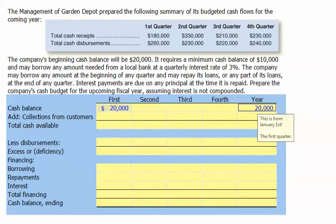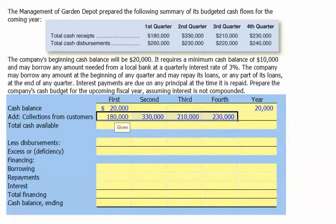Let's go ahead and prepare the cash budget for the upcoming year, assuming that interest is not compounded. Let's begin by picking up our cash receipts for each quarter that we're given — those will be for the first, second, third, and fourth quarters.